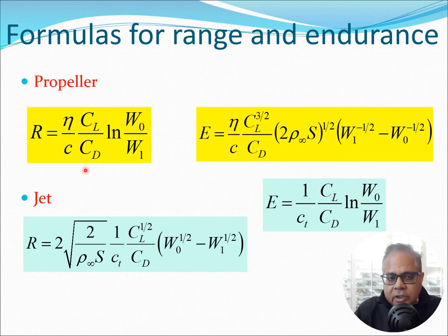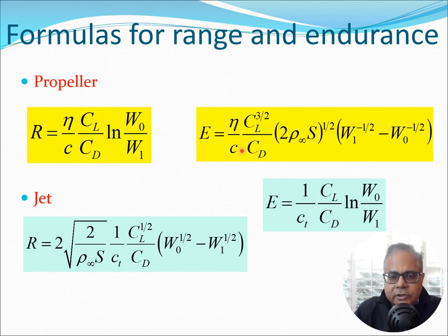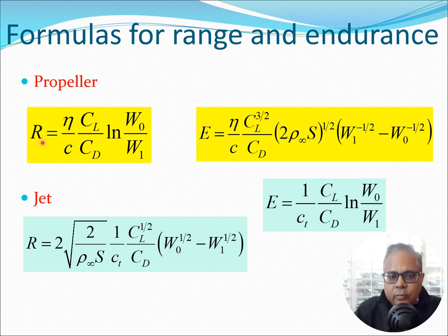Let's go through the four equations derived in the previous lectures, relating to propeller and jet aircraft. For the propeller, range is a function of CL/CD and endurance is a function of CL^(3/2)/CD. For the jet aircraft, range is a function of CL^(1/2)/CD and endurance is a function of CL/CD. To maximize any of these values of range or endurance, one strategy is to maximize the corresponding lift-to-drag coefficient ratios.